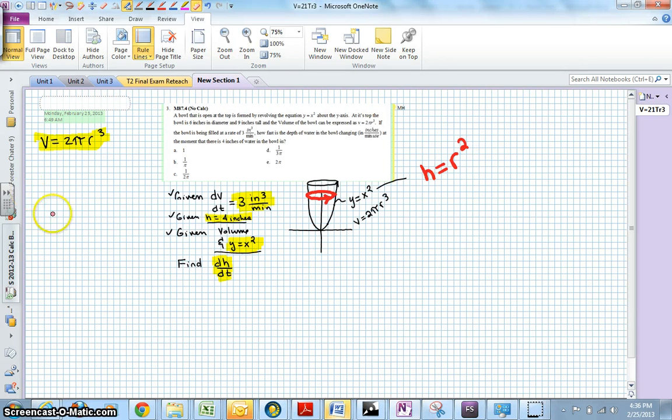So now I'll move over. If we were going to find dv dt, we would differentiate volume with respect to time, however in this case we don't have height, we have radius.